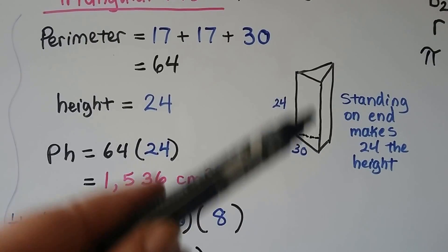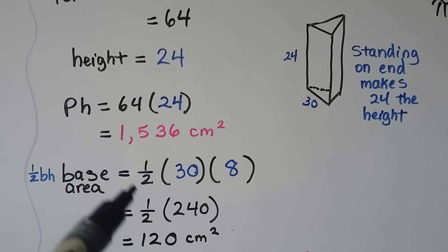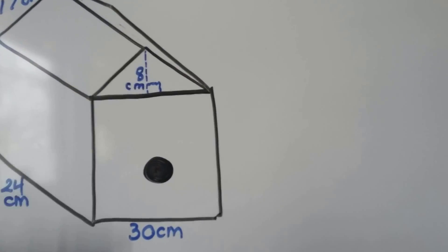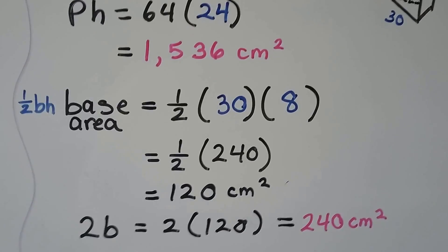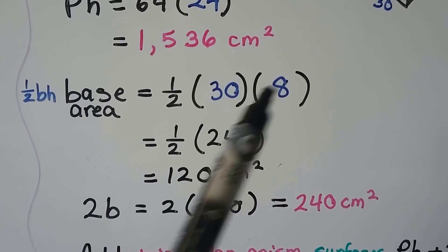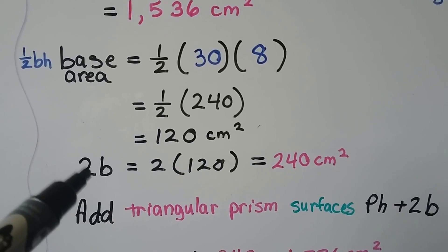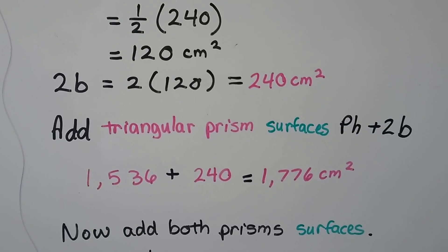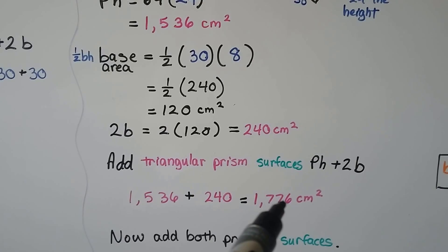Now we need the base area for these triangles. The formula is half times base times height. We do half times 30 times 8 — because that little interior height was 8. That's half of 240, which equals 120 centimeters squared. Two bases together is 2 times 120, which is 240 centimeters squared. Adding the triangular prism surfaces — 1,536 plus 240 — gives us 1,776 centimeters squared.